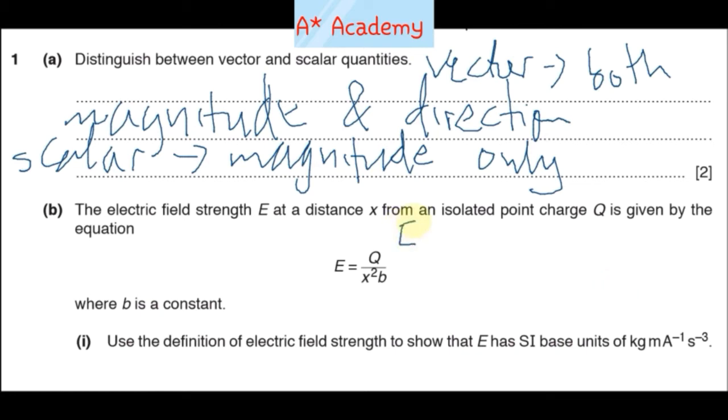And newtons, force, is mass times acceleration. So we can write that in SI base units as kg·m per second squared. That is force. Then coulombs, charge, is current times time, which is ampere seconds.